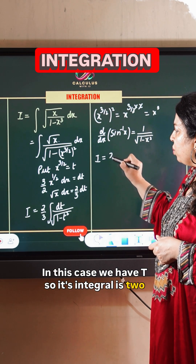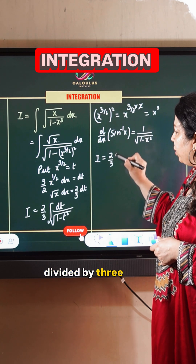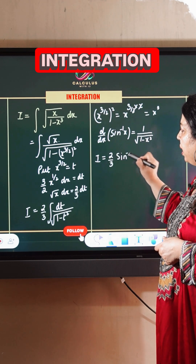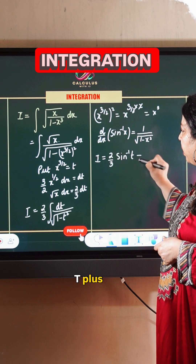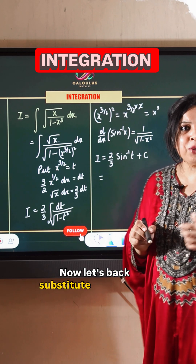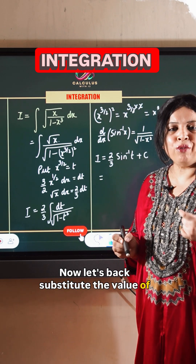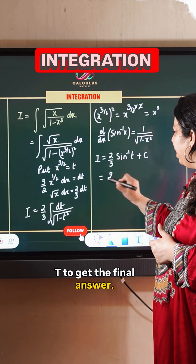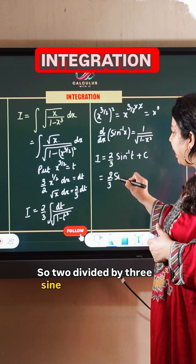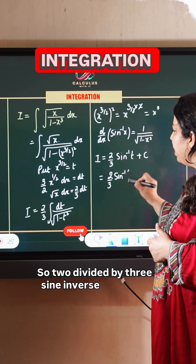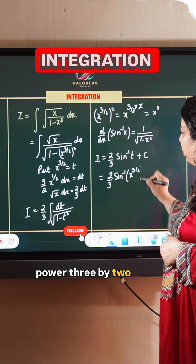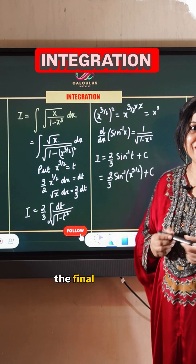So the integral is 2 divided by 3 sin inverse t plus c. Now let's back substitute the value of t to get the final answer. So 2 divided by 3 sin inverse x raised to power 3 by 2 plus c is the final answer.